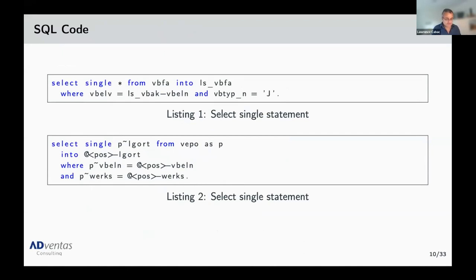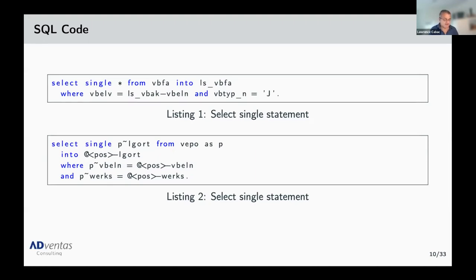Here are two examples. We have a SELECT SINGLE statement on the SD document flow table. We really don't know if this SELECT SINGLE is unique — in fact it's not — so we don't know which result we'll get compared to the old system. In the second case it should be unique, but if a UUID has been added as a key, we might even get duplicate keys of the old keys, which is sometimes problematic.